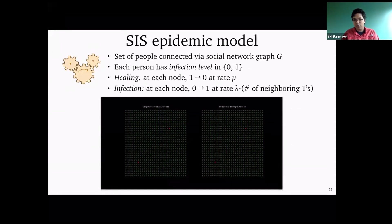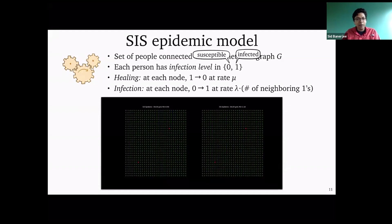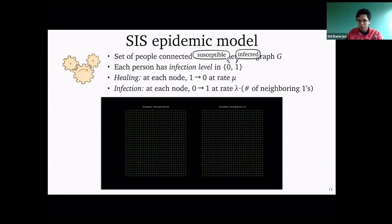In the SIS model, you have a social network connecting a bunch of people, and each person has some infection level: zero means susceptible, one means infected. In the SIS model, it's one of those infections that keeps coming back — you get infected, then you get healed at some rate mu, then you may get infected again. The rate at which anyone gets infected is lambda times the number of infected neighbors they have in the graph. Eventually, the epidemic must die out — everyone becoming susceptible is the only absorbing state. What's interesting is understanding how long the epidemic takes to die out, and this GIF shows two sample paths with very small differences in the parameter mu over lambda.